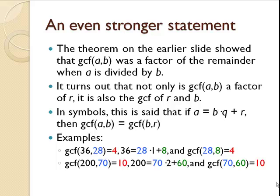And some examples we have with 36 and 28, the greatest common factor of those two numbers is 4. The remainder is 8, and the greatest common factor of 28 and 8 is also 4. Similarly with 270.